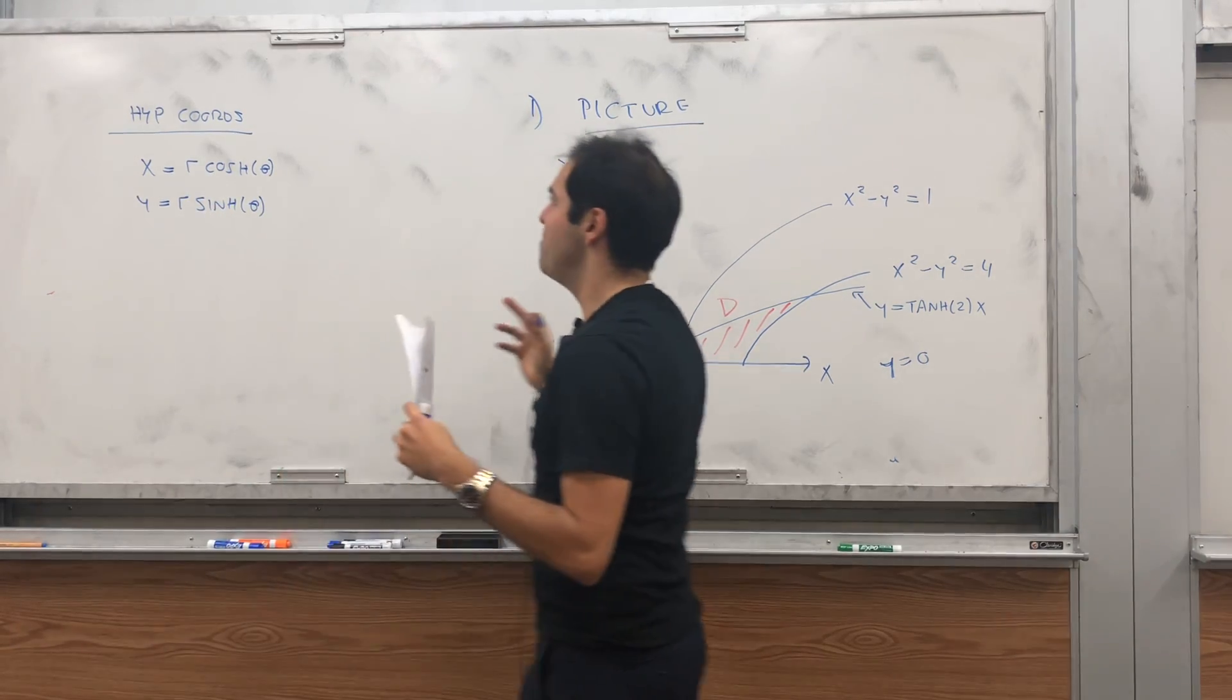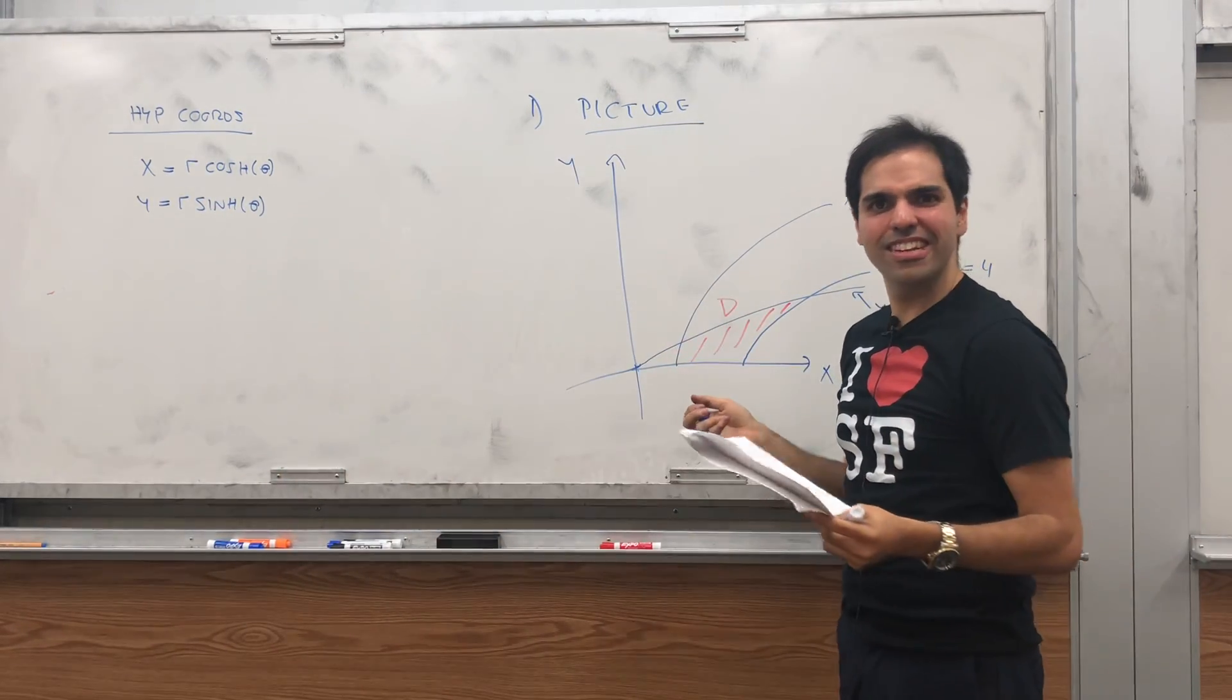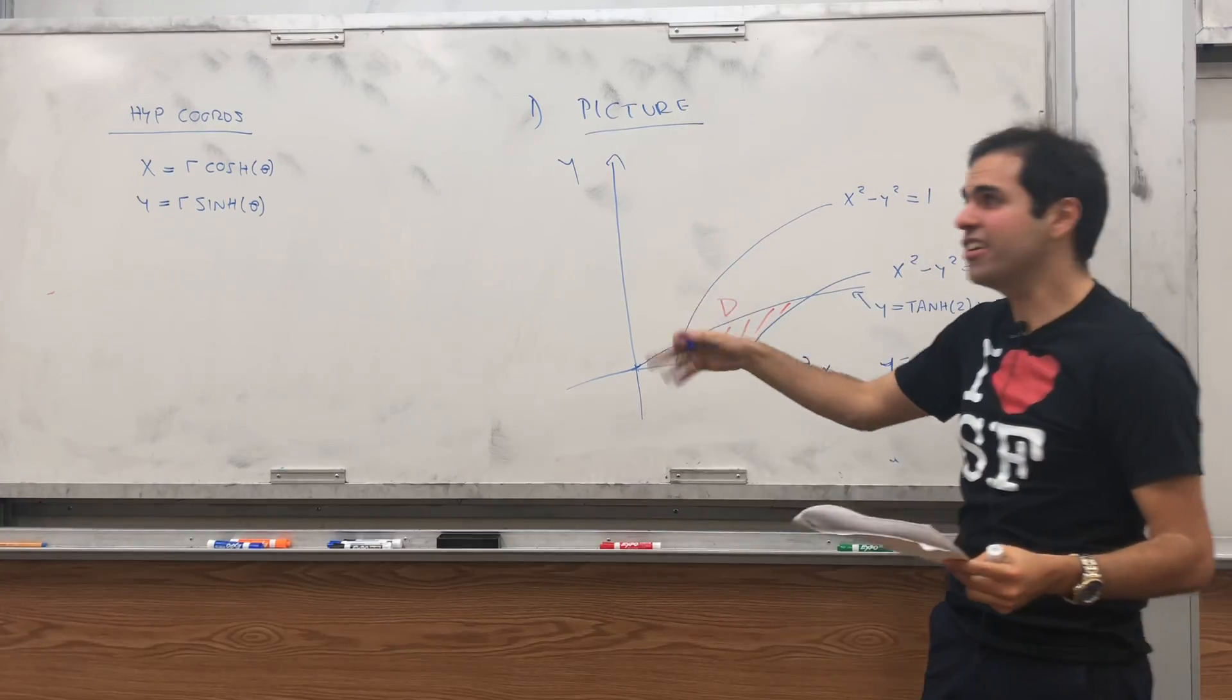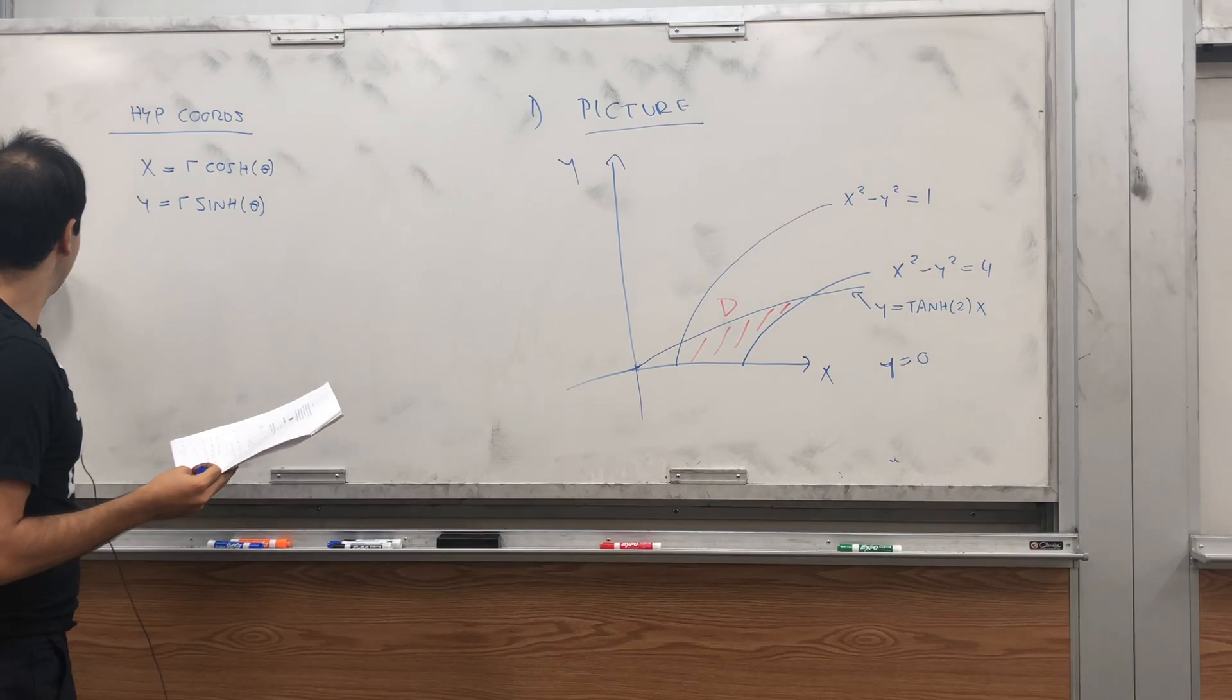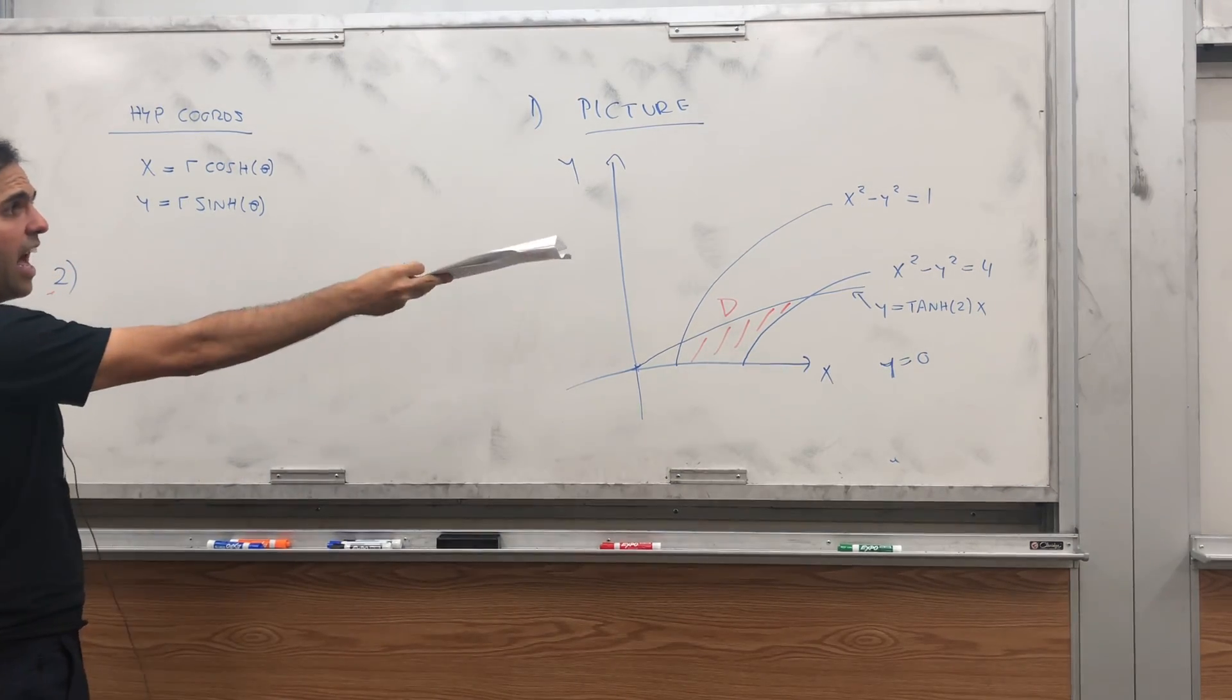And careful, before theta is always between 0 and 2 pi. Not here. Theta can be a thing between anything and anything. So, that's one thing.